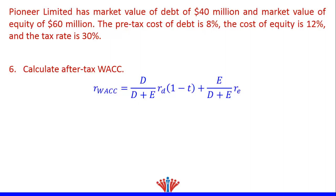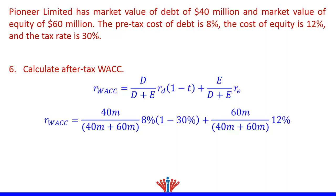So after-tax WACC is: 40 million dollars divided by (40 million + 60 million), multiplied by 8%, multiplied by (1 minus 30%), plus 60 million dollars divided by (40 million + 60 million), multiplied by 12%. This equals 2.24% plus 7.2%, giving us an after-tax WACC of 9.44%.